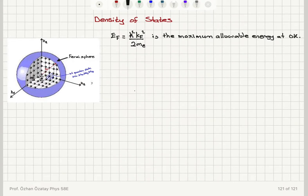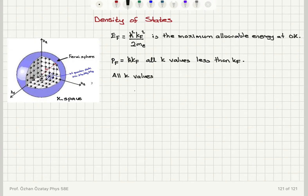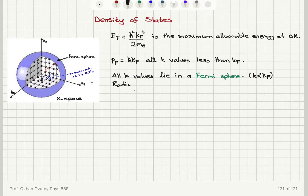All possible electron momenta h-bar k will be bounded similarly by the Fermi momentum. The corresponding Fermi momentum is h-bar kf, and all k values are less than kf, so that we have the maximum energy equal to the Fermi energy. We can consider the k values in k-space. All k values lie in what is called a Fermi sphere, where the magnitude of each k vector is less than kf. The radius of the sphere is equal to kf, the Fermi wave vector magnitude.